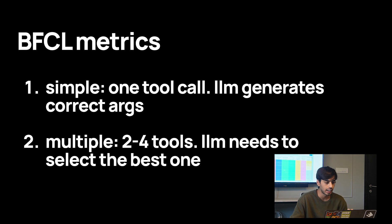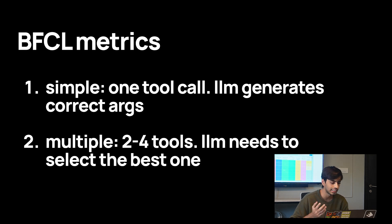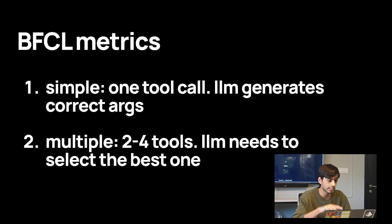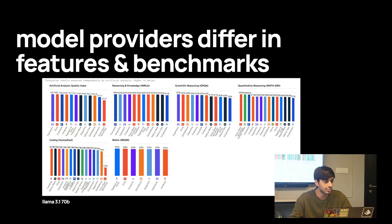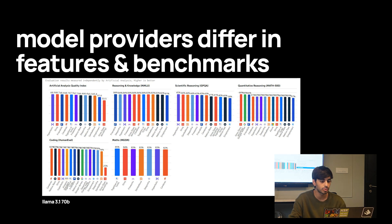They also have two evaluation methods: AST-based checking whether the generated function call is syntactically correct, and actually running the function to see if it returns the correct values. They test single-turn and multi-turn calls. Top scores are around GPT-4o and GPT-4 Turbo, and this also tops out around 68–69%, consistent with the Scale leaderboard.